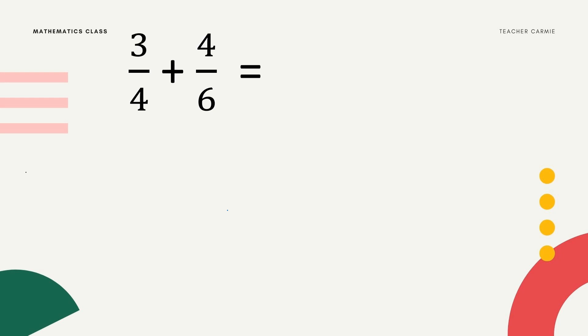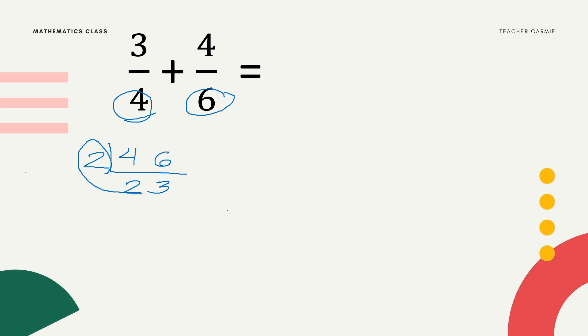Given the example 3/4 plus 4/6, first we need to find the LCD of 4 and 6. Using continuous division: 4 and 6 are both divisible by 2. 4 divided by 2 is 2, and 6 divided by 2 is 3. Since 2 and 3 are both prime numbers, we stop. We multiply the outside numbers: 2 times 2 times 3. So the LCD is 2 times 2 times 3 — that's 4 times 3 equals 12.